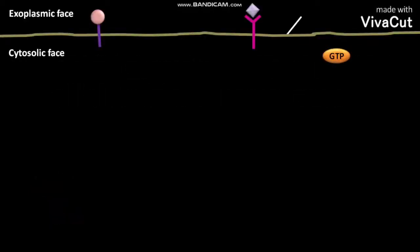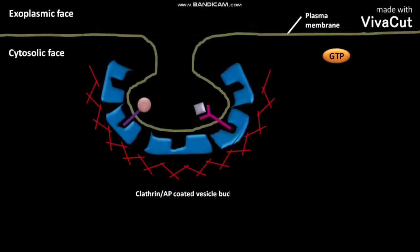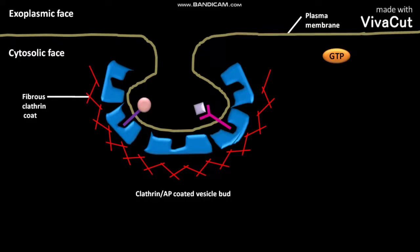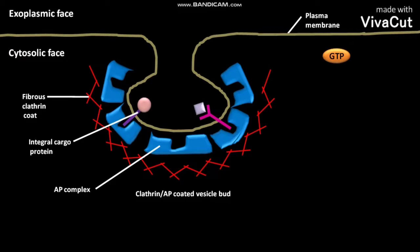This is the plasma membrane of a cell during receptor-mediated endocytosis. A clathrin and epi-coated vesicle bud is formed. The outermost layer of this clathrin and epi-coated vesicle bud is composed of a fibrous clathrin coat. Inner to the fibrous clathrin coat, another coat made up of epi complexes is present.